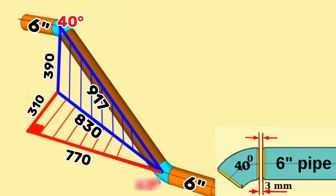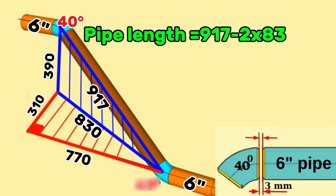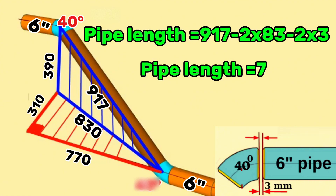Let's calculate the brown color pipe section length. Pipe length equals total length 917 millimeters, minus 2 times the 6 inch 40 degree butt weld elbow dimension of 83 millimeters, minus 2 times the welding gap of 3 millimeters. The length of the 6 inch brown color pipe section on this pipeline is 745 millimeters.